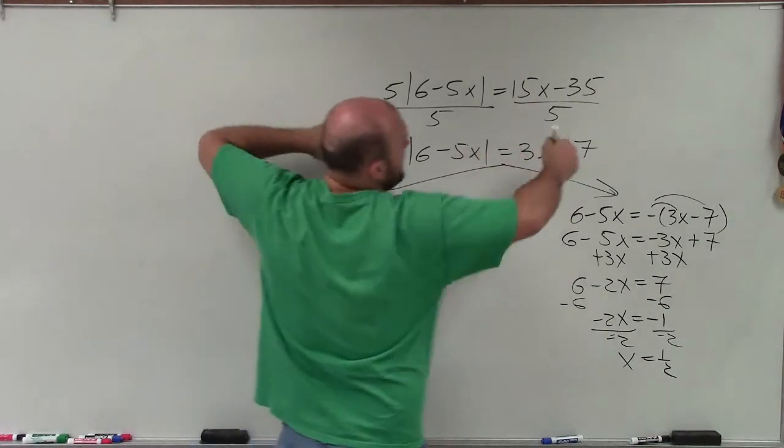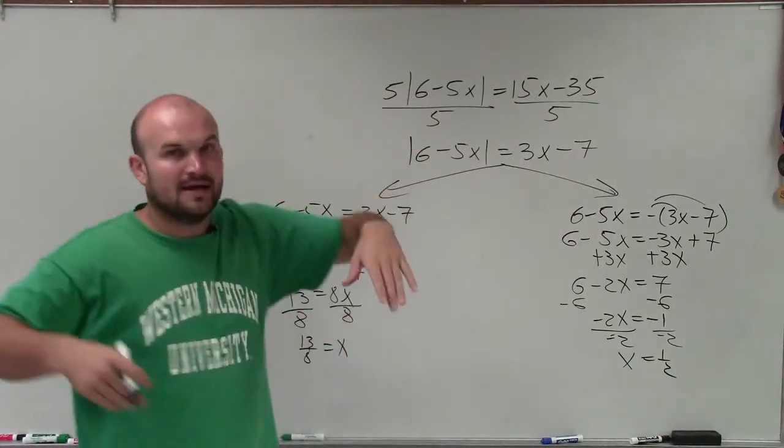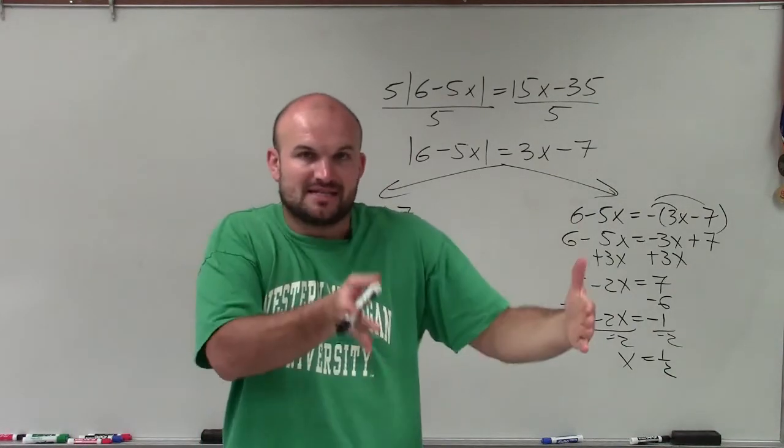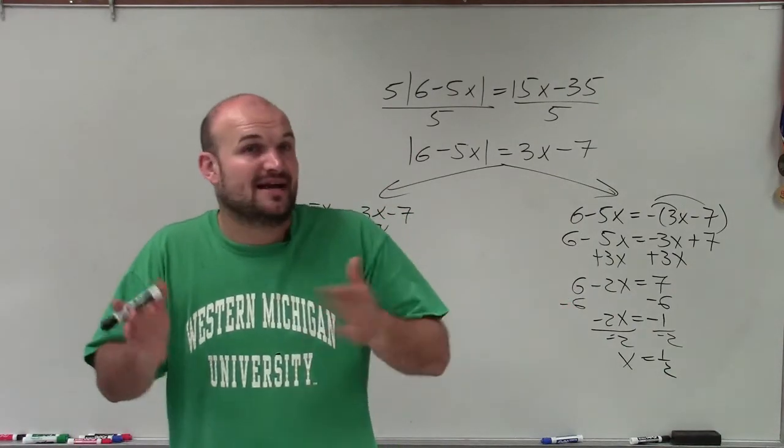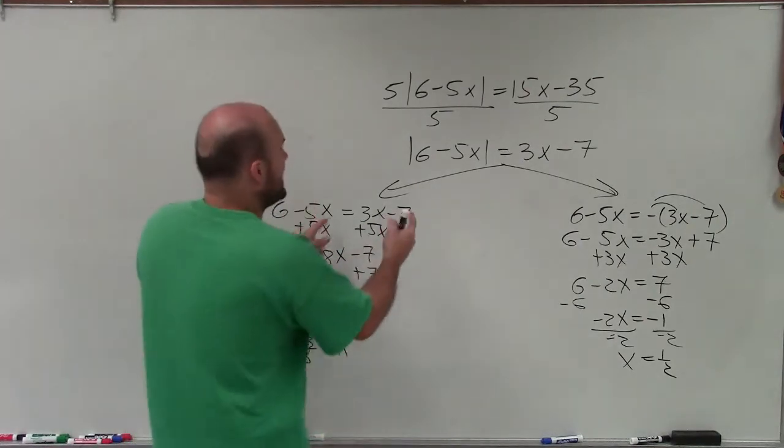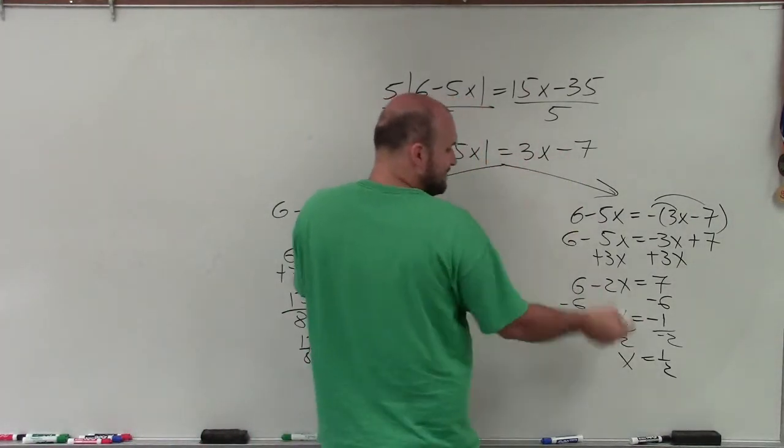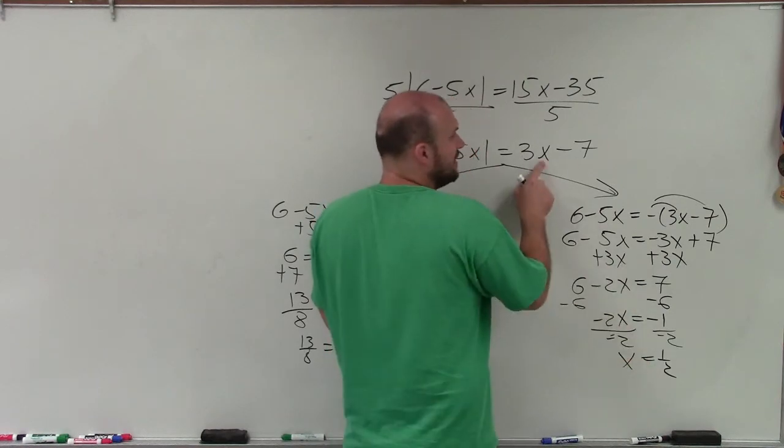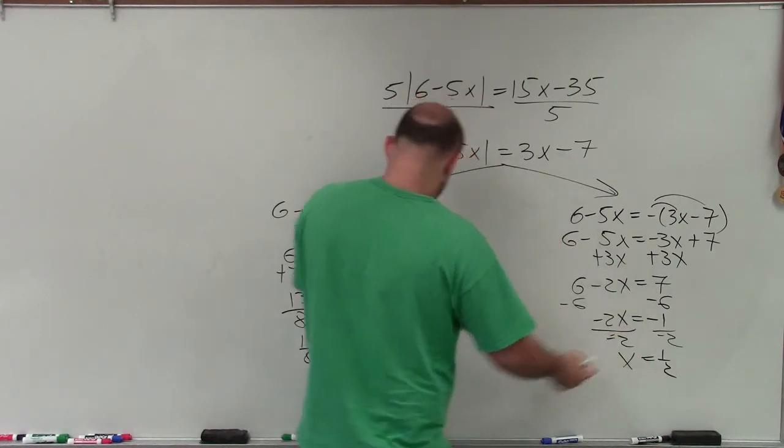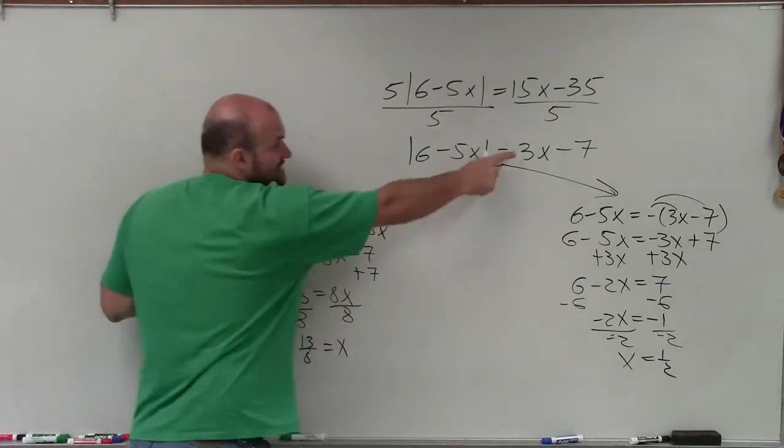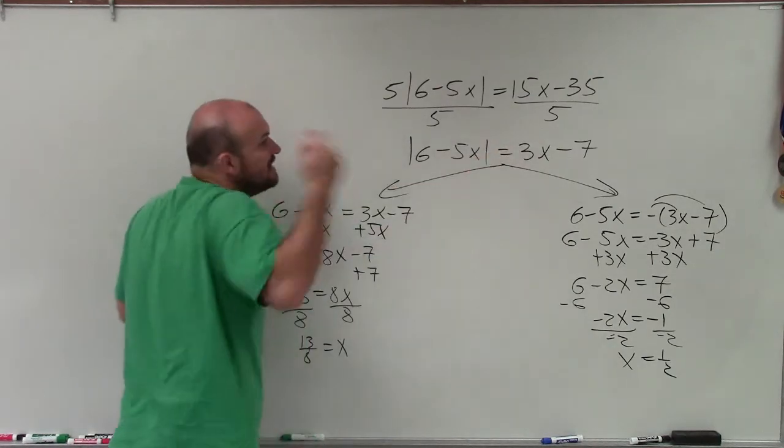And remember, an absolute value can never equal a negative value, right? Absolute value of x is equal to positive x. Absolute value of negative x is equal to positive x. So our absolute value can never equal a negative value. Well, if you multiply 3 times 1 half and subtract 7, it's going to be negative. If you multiply 13 eighths times 3 minus 7, that's going to be negative as well.